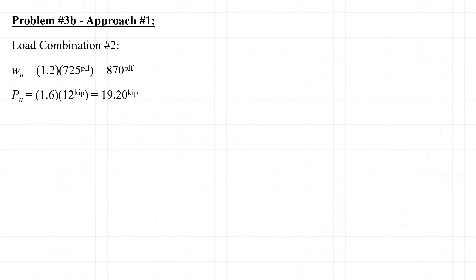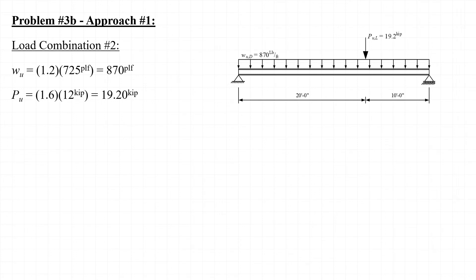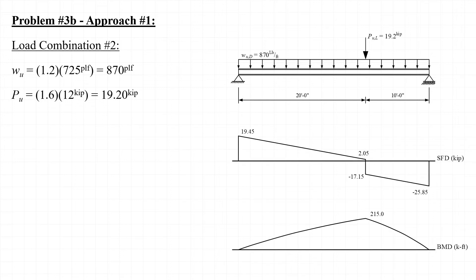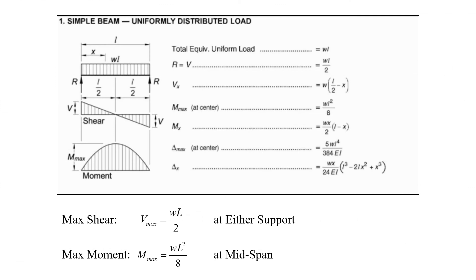Still using approach number one but now considering load combination number two, the applied loading consists of a uniformly distributed load of 870 pounds per linear foot and a single point load with a magnitude of 19.2 kips. From the resulting shear force and bending moment diagrams, the maximum shear force occurs at the right end with a magnitude of 25.9 kips, and the maximum bending moment occurs under the point load with a magnitude of 215 kip-feet. Note that I report the absolute value of the maximum shear force since the sign typically doesn't matter.